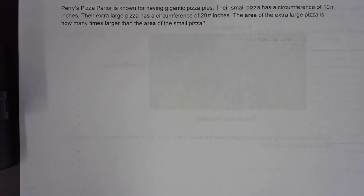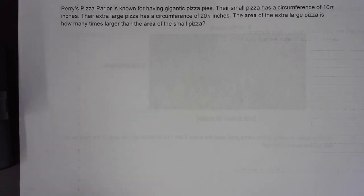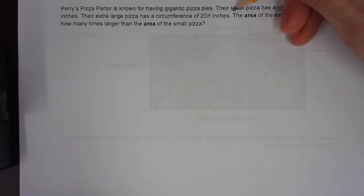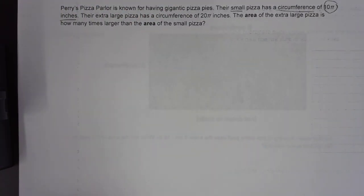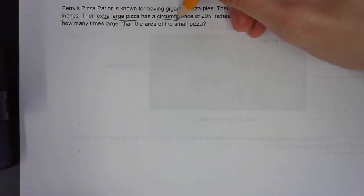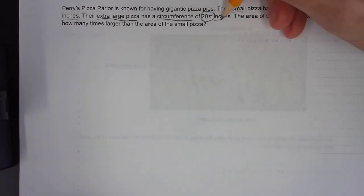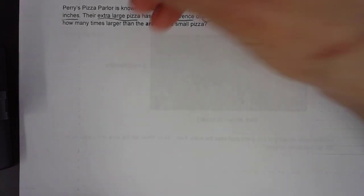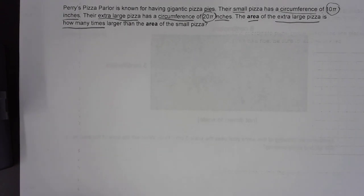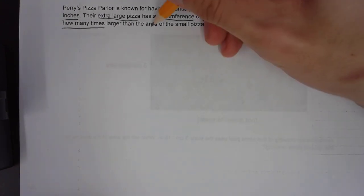Perry's Pizza Parlor is known for having gigantic pizza pies. Their small pizza has a circumference of 10π inches. Their extra-large pizza has a circumference of 20π inches. The area of the extra-large pizza is how many times larger than the area of the small pizza?